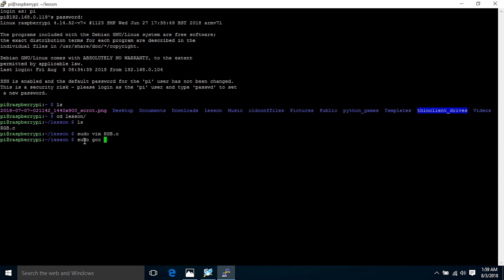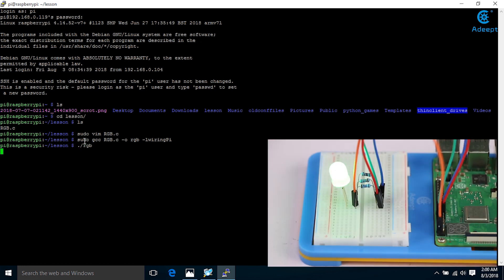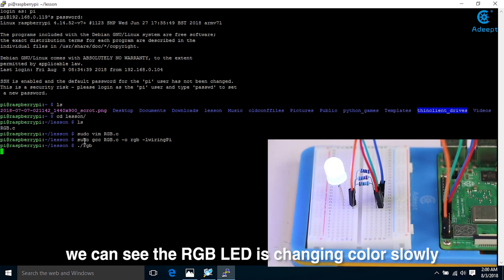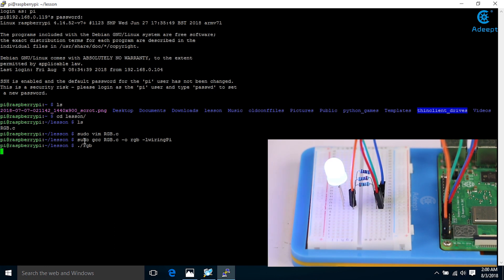Let's begin to compile the code and execute the RGB executable file. We can see the RGB LED is changing color slowly. You can change the parameters to make it change faster. Press CTRL and C to stop the code running.